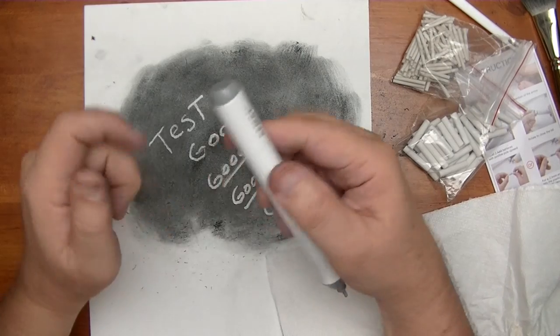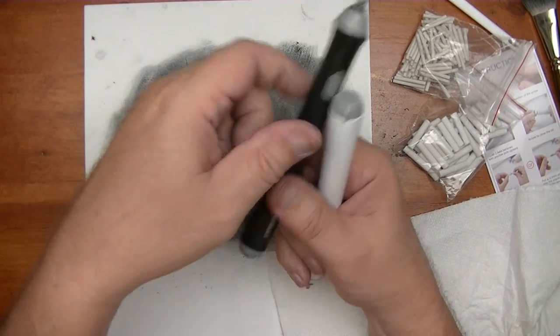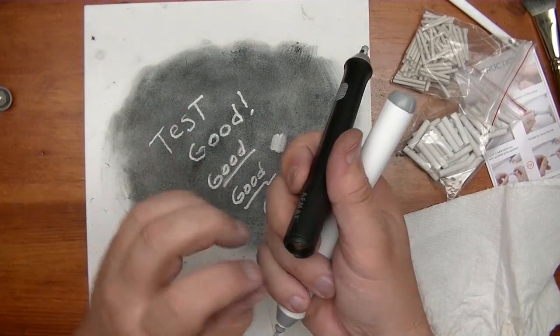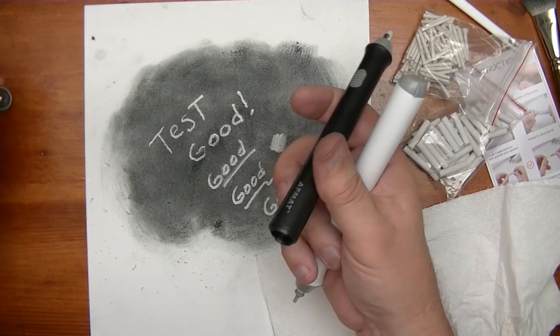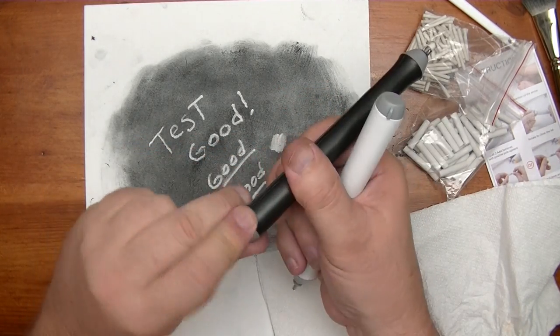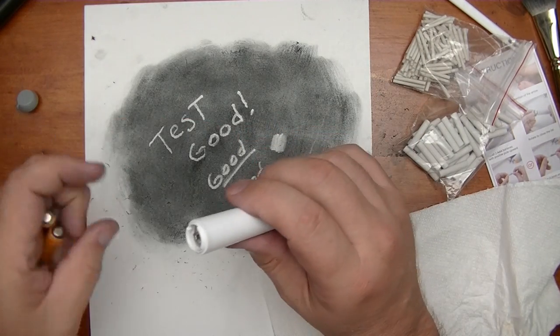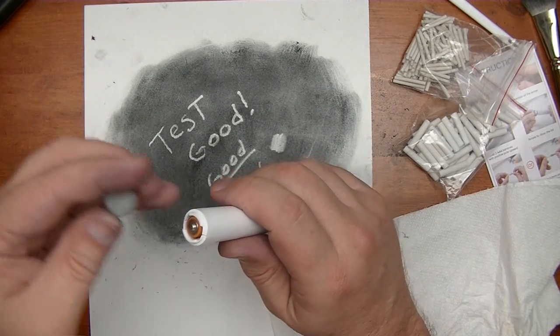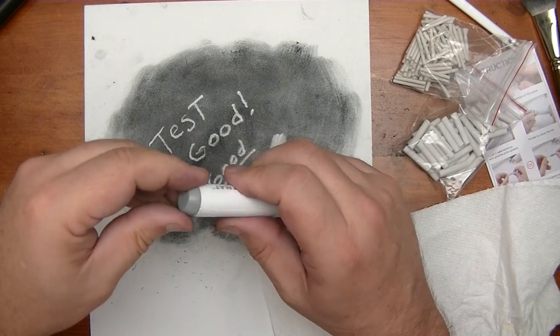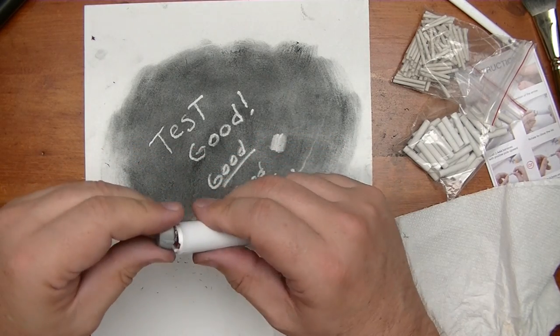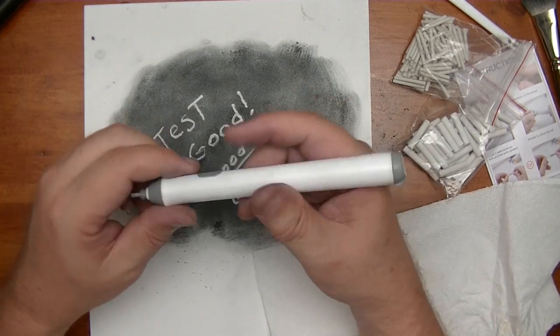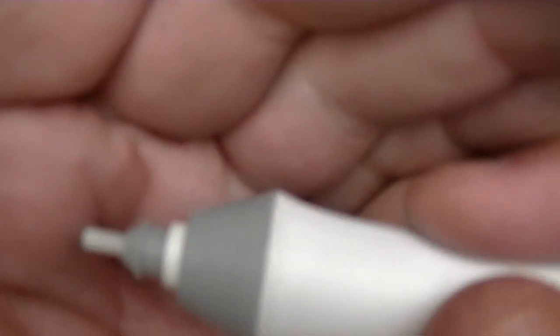First thing is I'm going to remove this thicker eraser that it comes with and stick that in the little bag there so I don't lose it. Then I'm going to grab one of these thin erasers, great for thin details. And here you have this adapter thing that it comes with, this plastic adapter, and it's going to fit right in here nice and snug. This is going to need a couple of batteries as well.